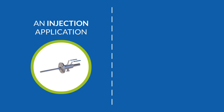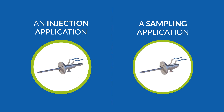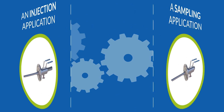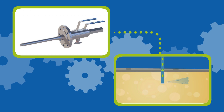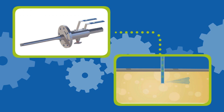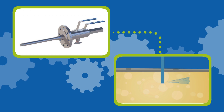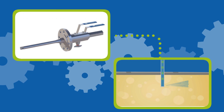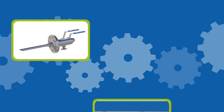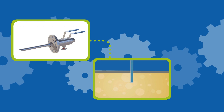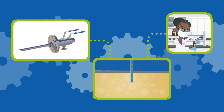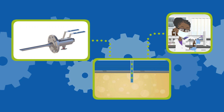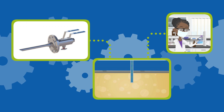But first, let's explain the difference between an injection application and a sampling application. As the name suggests, injection is used when adding additives into the media in the pipeline to produce a product according to end-user specification. As for sampling, the purpose is to draw media out from a pipeline, and this media will be used as a sample that will be sent to a lab to check if the sample drawn from this sector is within the product parameters.